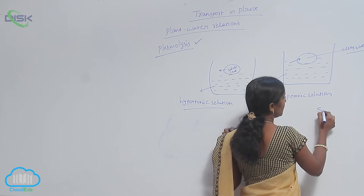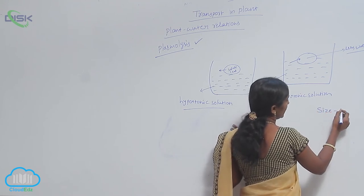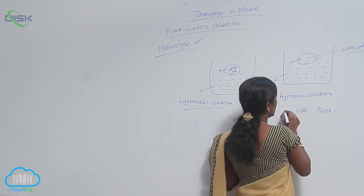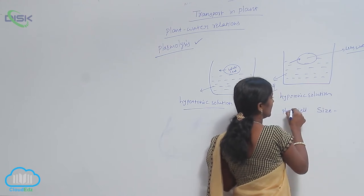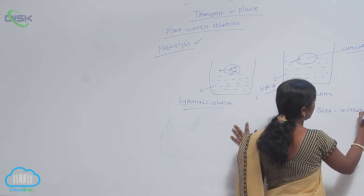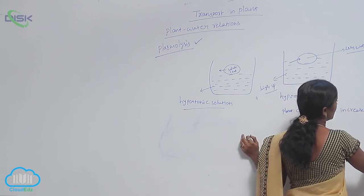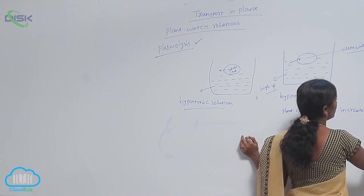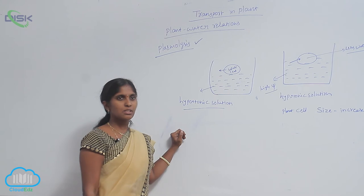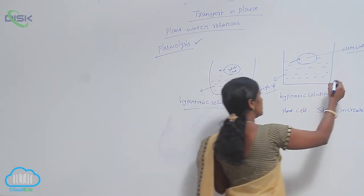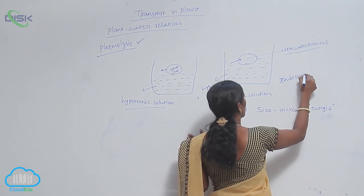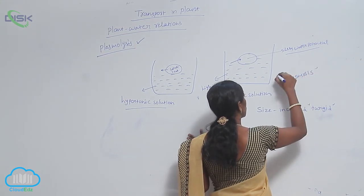Then the size of the plant cell is increased — it becomes turgid. This type of osmosis is called endosmosis.